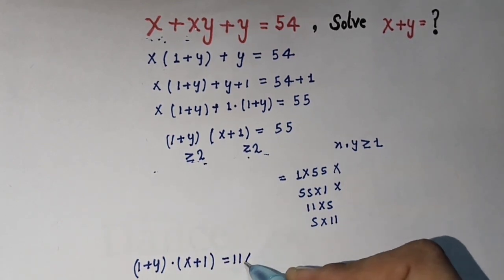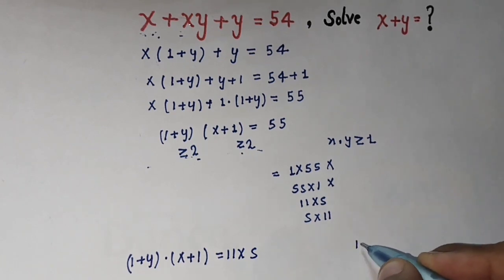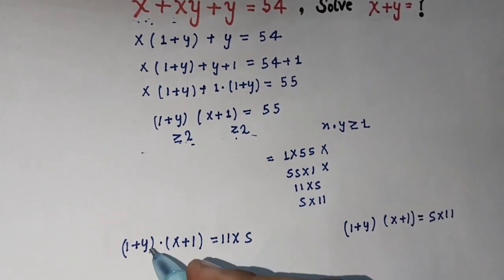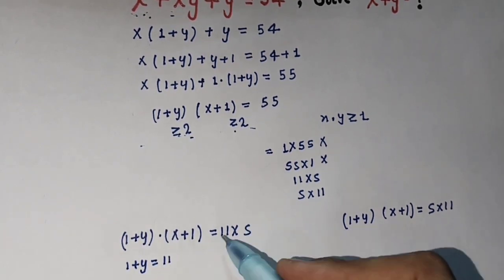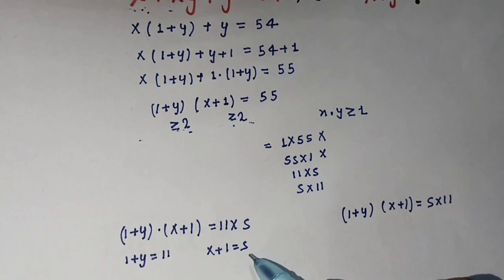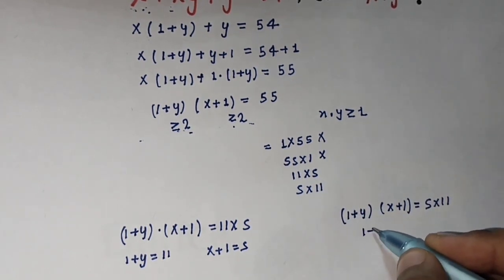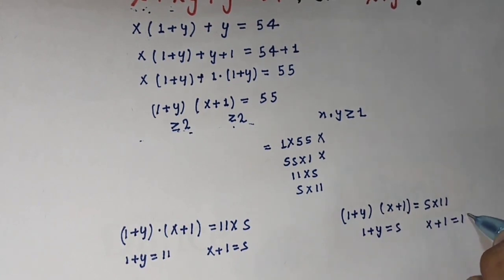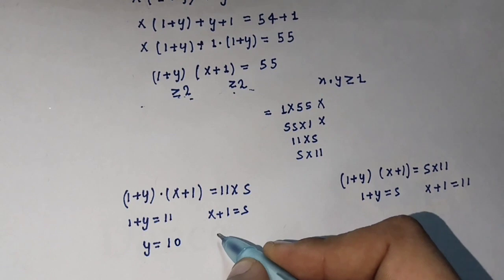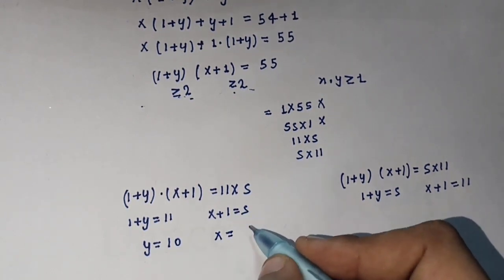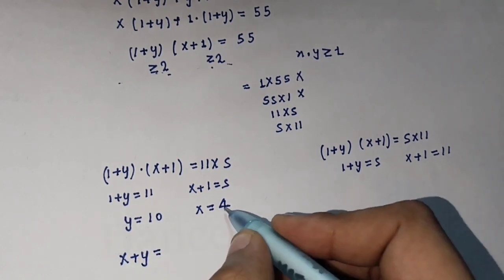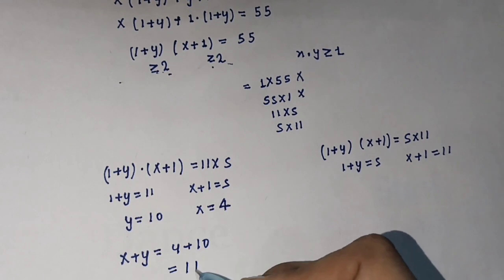Case 1: (1 plus y) times (x plus 1) equals 11 times 5, so (1 plus y) equals 11 and (x plus 1) equals 5. Solving: y equals 11 minus 1 equals 10, and x equals 5 minus 1 equals 4. Therefore x plus y equals 4 plus 10 equals 14.